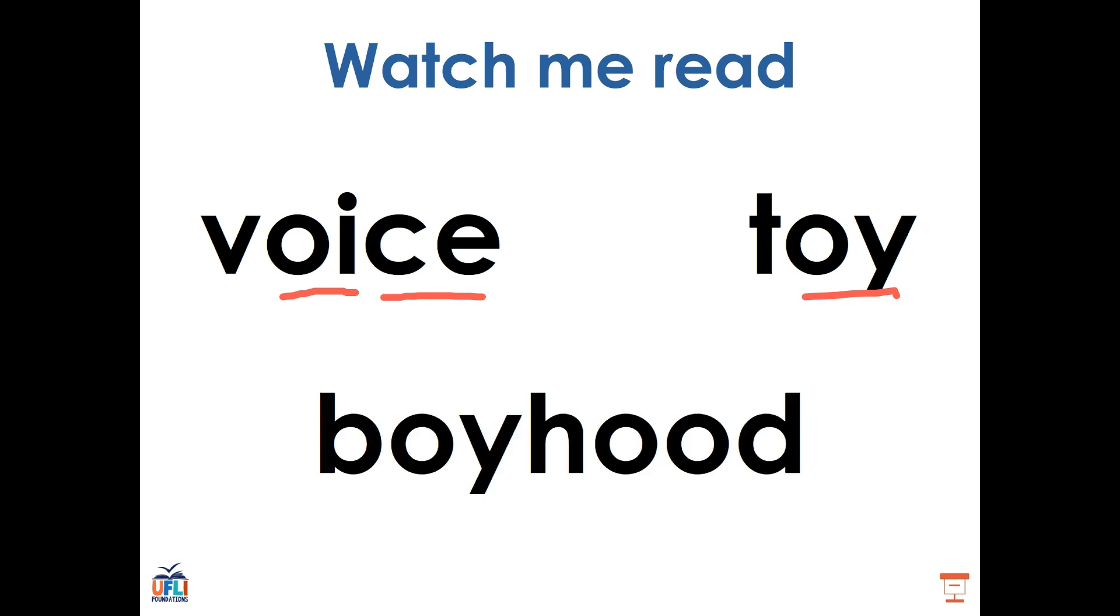Now this is a compound word. There are two parts and the first part has the OY OI pattern, whereas in the second part of our compound word, we have the double O pattern, which we know either says OO or OO. Let's sound this word out in parts: B, boy, boy; H, U, D, hood. Let's put them together: boy, hood, boyhood. Very good.